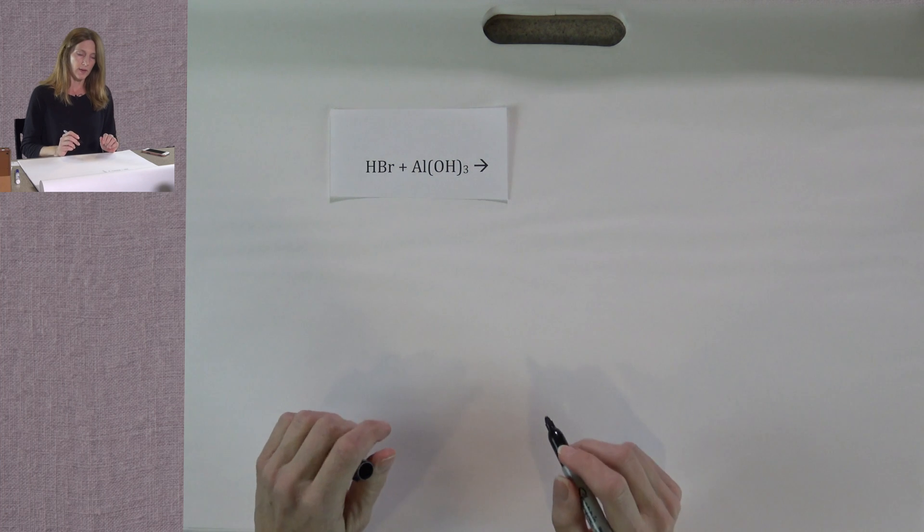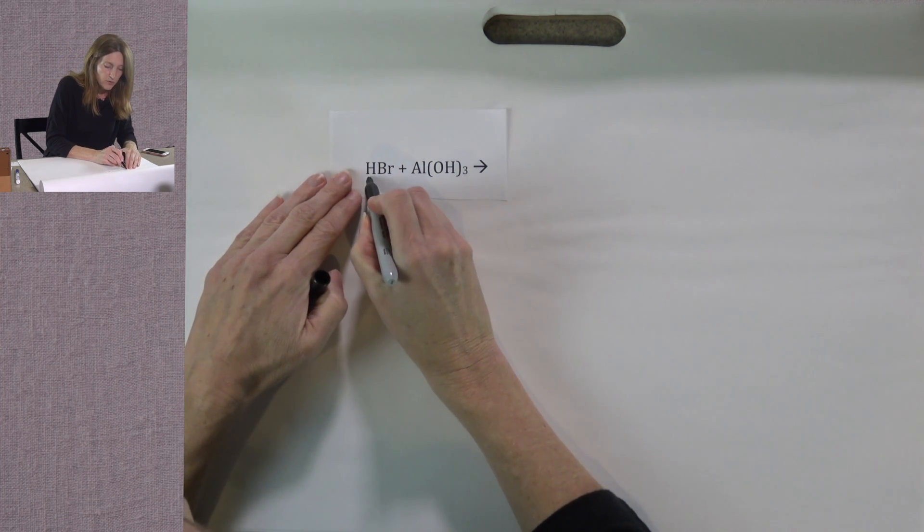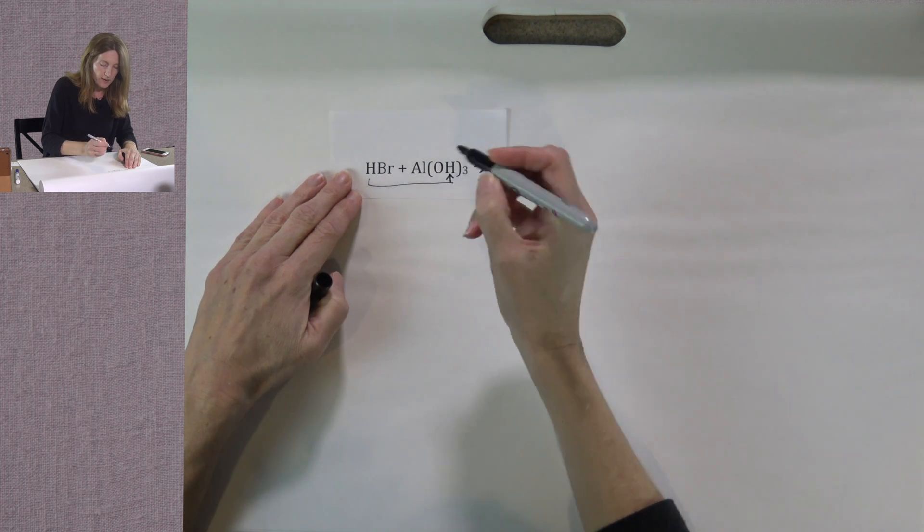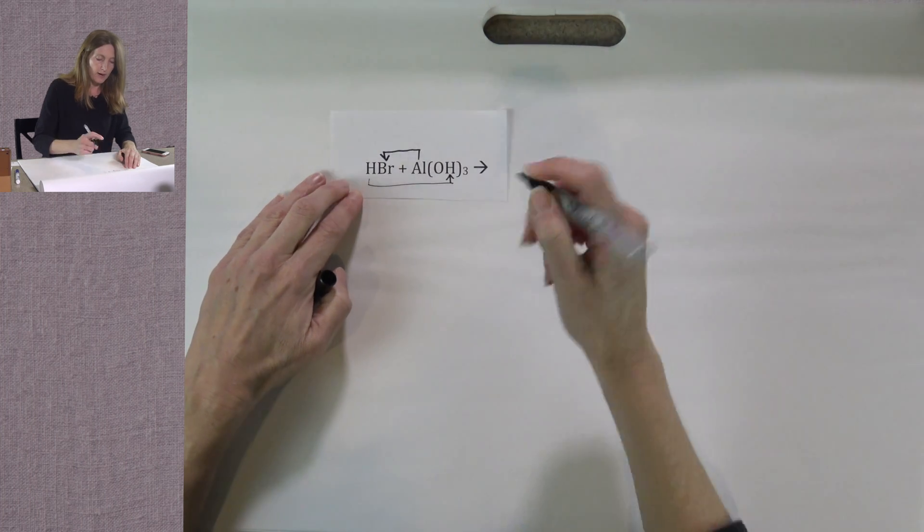So again, the cations and anions will switch partners. The hydrogen ion will combine with the hydroxide ion. The aluminum ion will combine with the bromide ion.